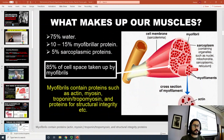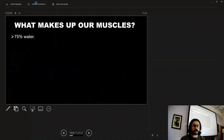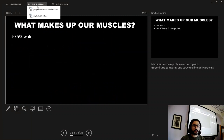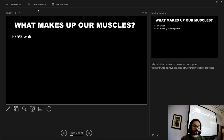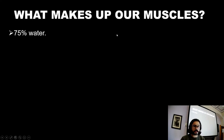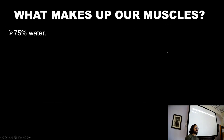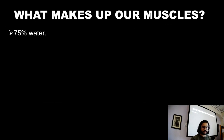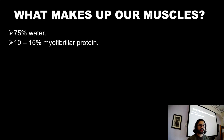What I want to talk to you about is what makes up our muscle. Before we talk about how it grows, we need to know what it consists of. 75% of your muscle is made up of water — that's what it mainly consists of.